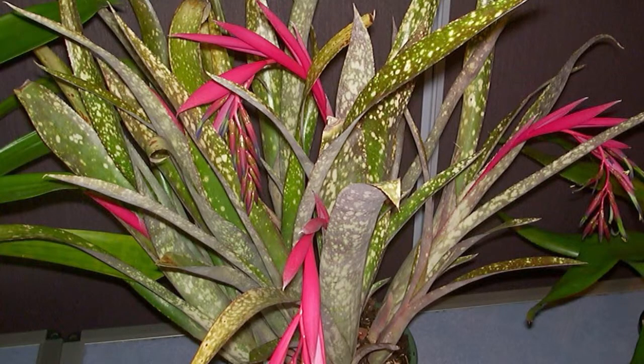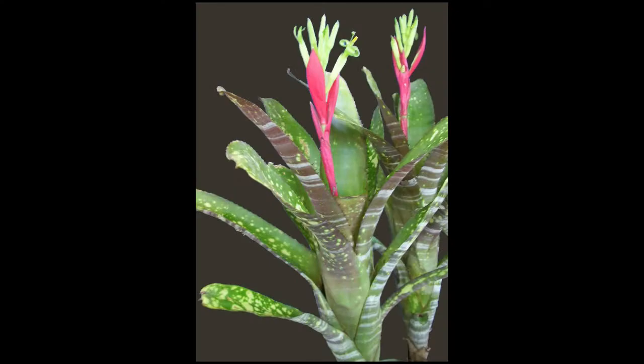Bilbergia is a genus of flowering plants in the family Bromelyaceae, subfamily Bromelyaceae. The genus, named for the Swedish botanist, zoologist, and anatomist Gustav Johan Bilberg, is divided into two subgenera: Bilbergia and Helicidaea.